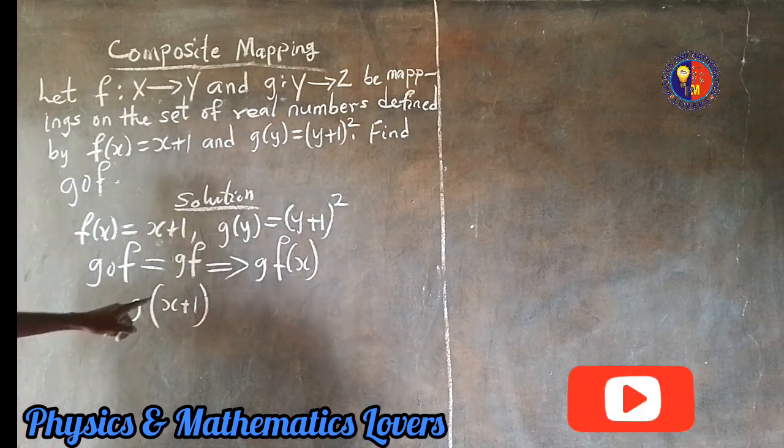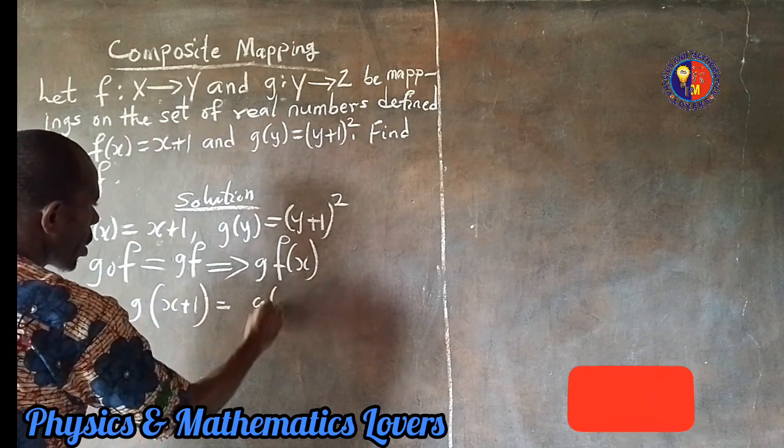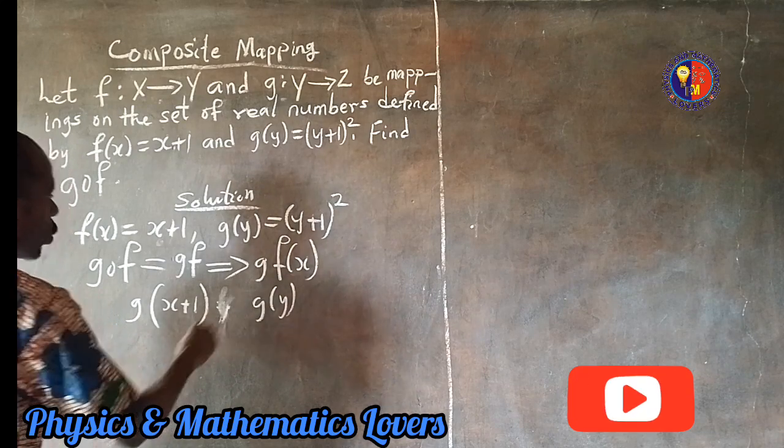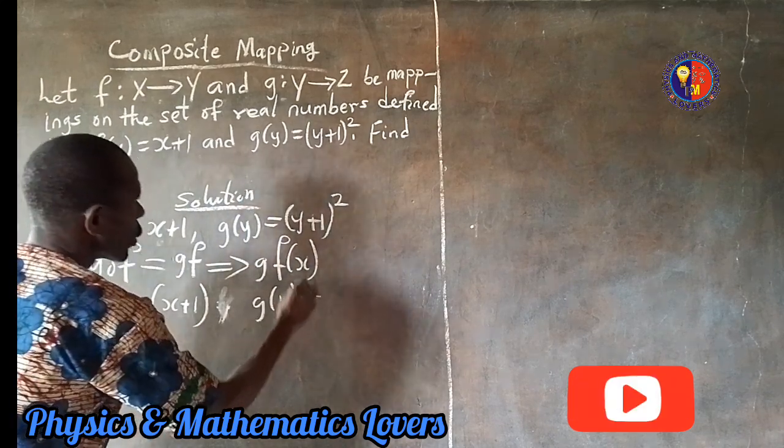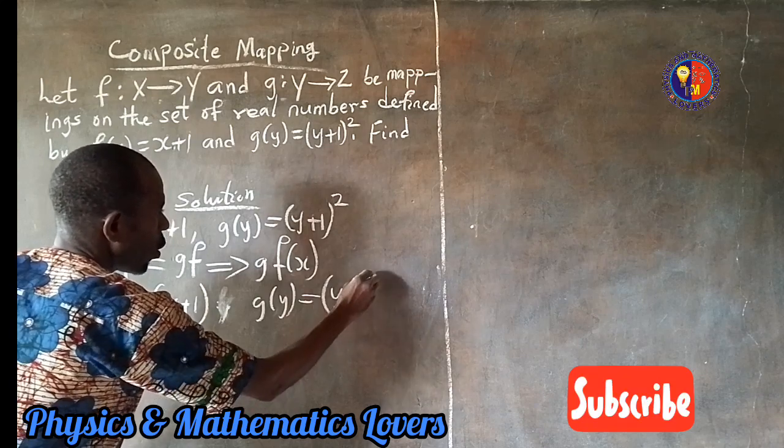But remember that g is a function of what? So we have g(y). Remember, we have g(y) as equal to (y plus 1) all squared.